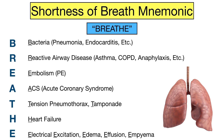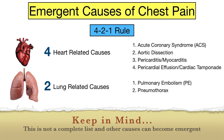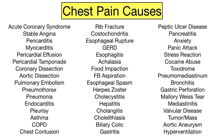You can see how the BREATHE mnemonic, along with the 4-2-1 rule, provides a great way to remember some of the main emergent causes of chest pain and shortness of breath. It's important to note that this is not a complete list — there are other causes that can become emergent too — but this is a good list of the main ones. Having a simple way to remember the emergent causes using the 4-2-1 rule is very helpful.